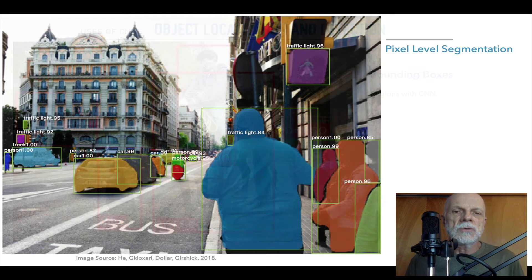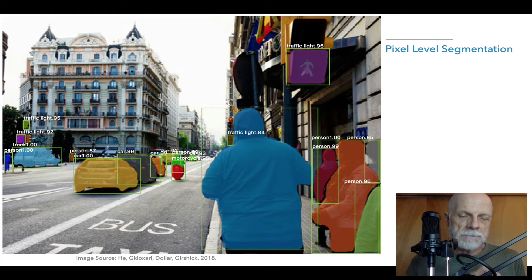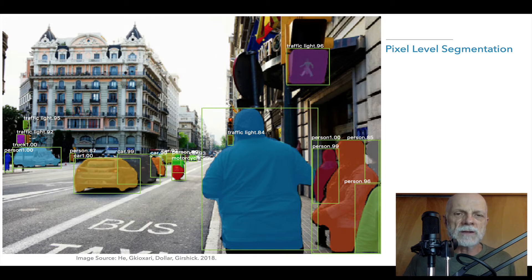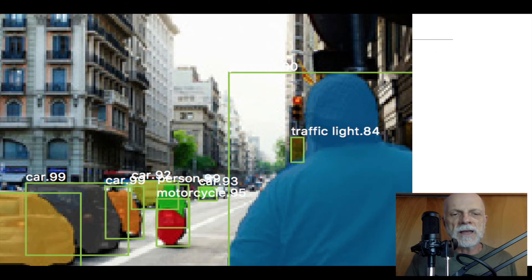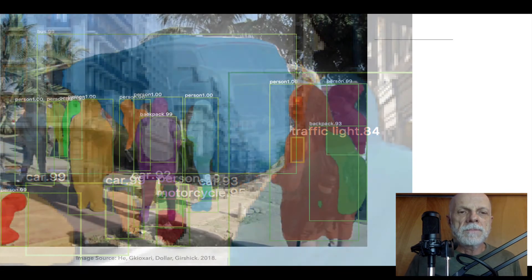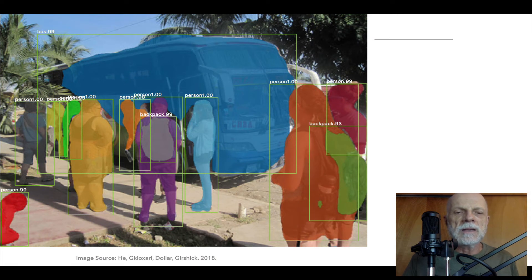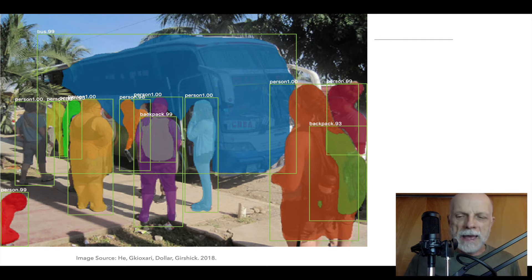The next level up is pixel-level segmentation — you can assign which object each pixel belongs to. Not only does it say here's a picture of a person or a traffic light, but it can draw a bounding box and also say these are the pixels that relate to that person. For example, it can detect the motorcycle and the person on top of the motorcycle. It can even detect backpacks on the backs of people.